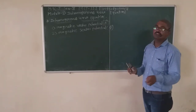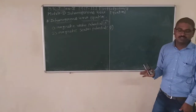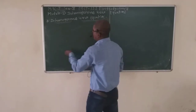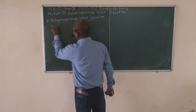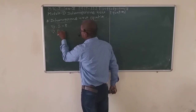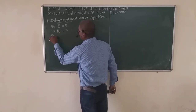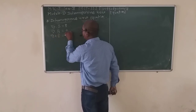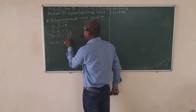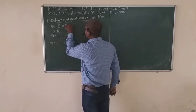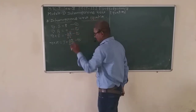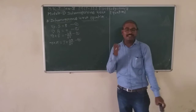Then we use Maxwell's four differential equations. These are: del dot D-bar equals rho; del dot B-bar equals 0; del cross E-bar equals minus dB/dt; and del cross H equals J plus dD/dt. These are labeled equation 1, equation 2, equation 3, and equation 4.